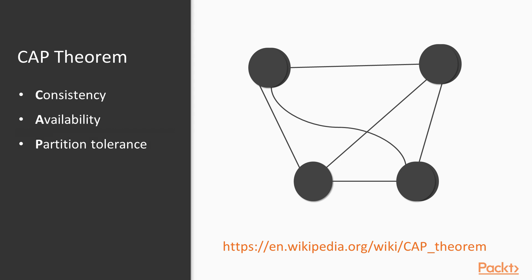Partition tolerance means that data or messages can flow freely within the network between nodes, despite having any network failure, delays, or drops in the actual data. It has been shown mathematically that you can only have two of the three of these at most and cannot have all three, as it is a distributed system which depends heavily on network availability — the interconnectivity between the nodes.